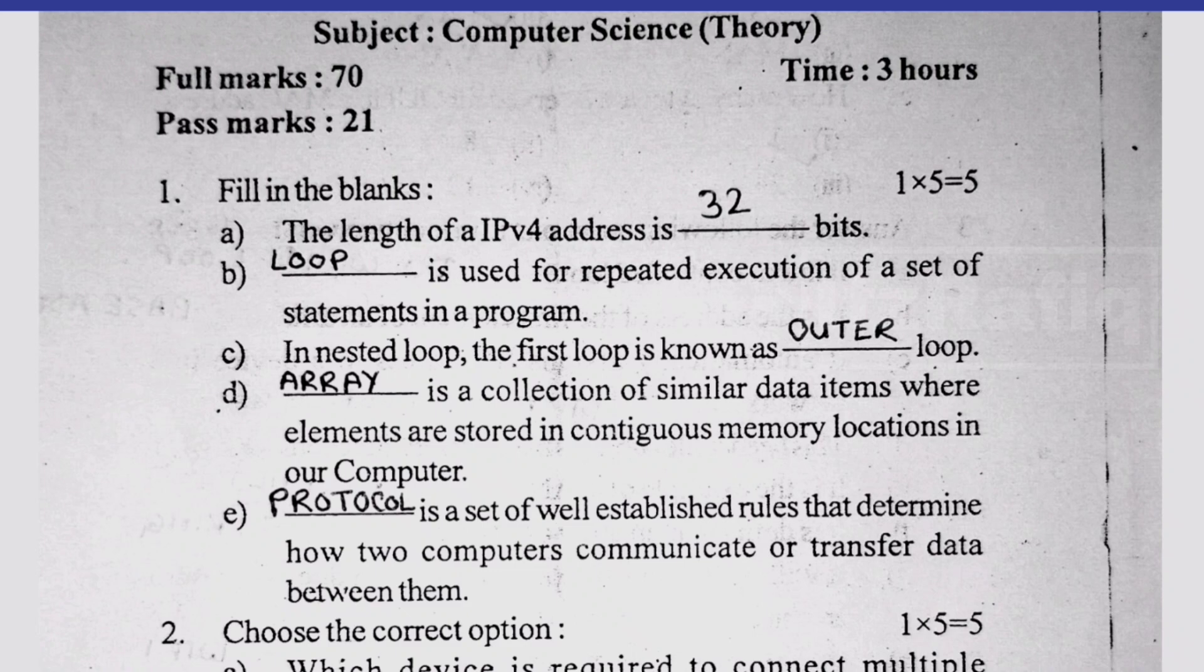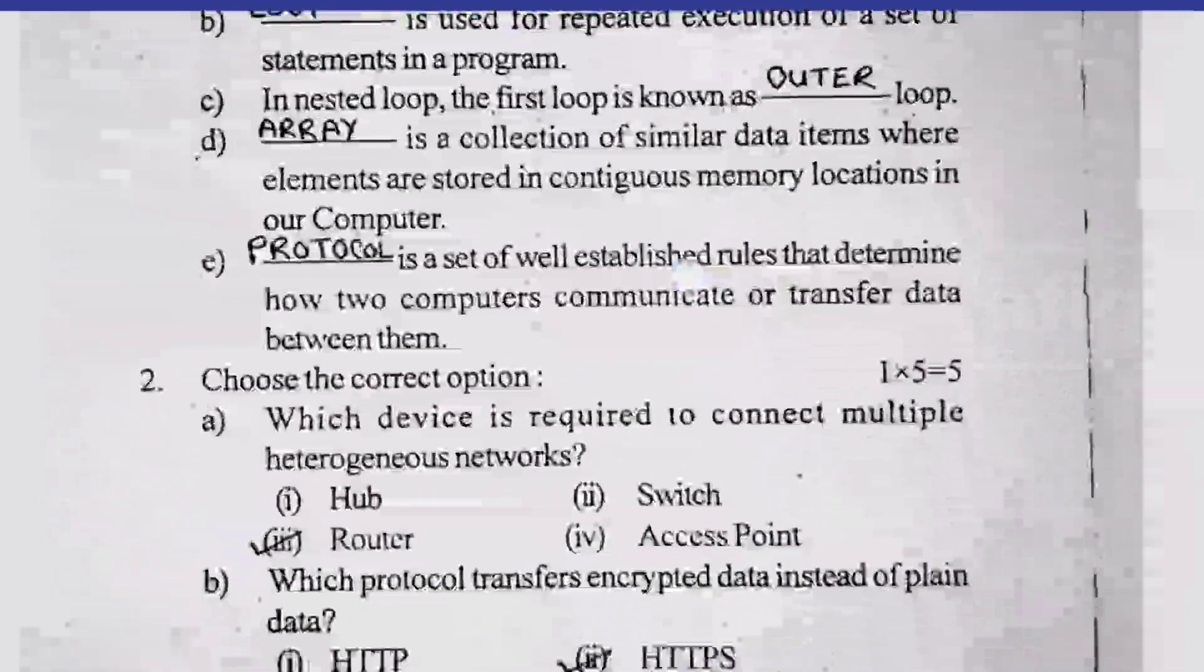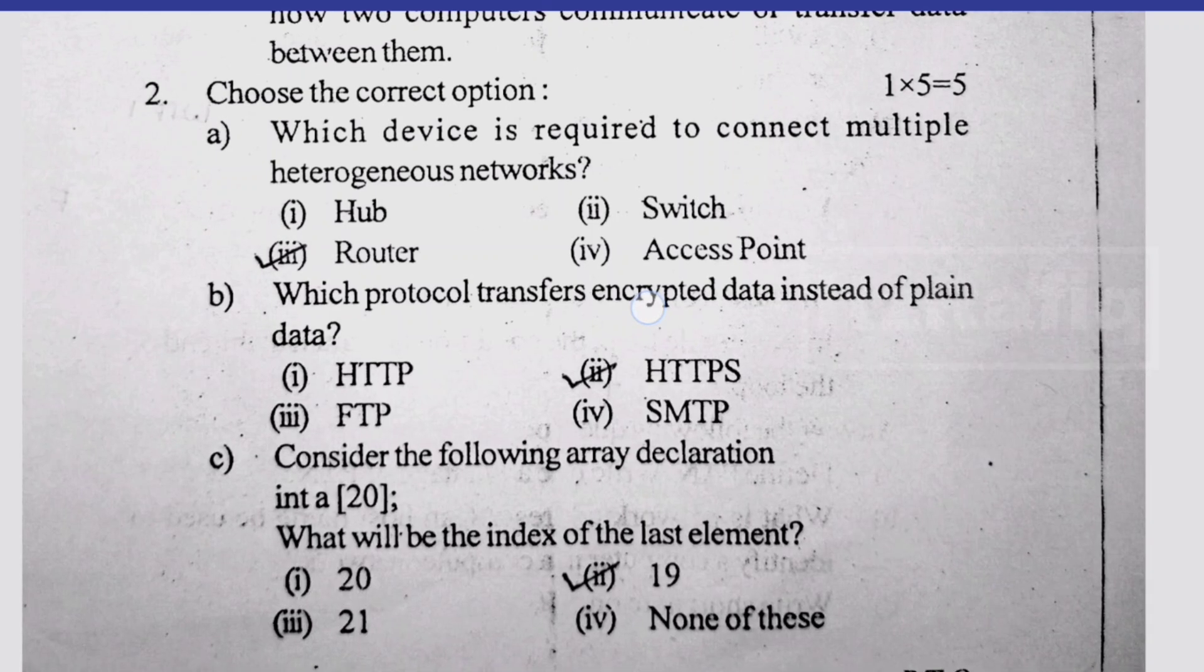Then MCQ, first which is required to connect multiple heterogeneous networks. Heterogeneous means different types. If we connect different types of networks we need router. Number b, it transfers encrypted data, it will be HTTPS. Number c, consider the following declaration int a[20], what will be the last index? Last index is always size minus 1, so 20 minus 1 is 19.